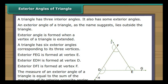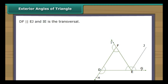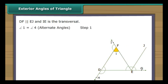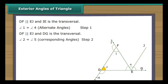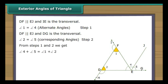Let us now prove this. We draw a line segment EJ from point E such that EJ is parallel to DF. If we regard IE as a transversal intersecting the parallel lines DF and EJ, angle 1 equals angle 4 (alternate angles). If we regard DG as a transversal intersecting the parallel lines DF and EJ, angle 2 equals angle 5 (corresponding angles). From these two steps, angle 1 plus angle 2 equals angle 4 plus angle 5, meaning angle FEG equals angle DFE plus angle FDE.